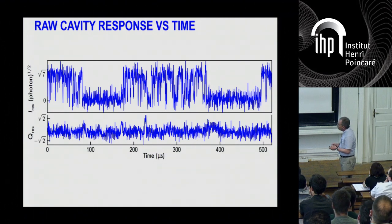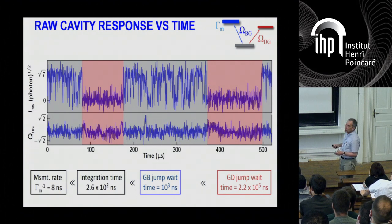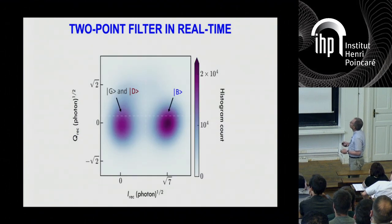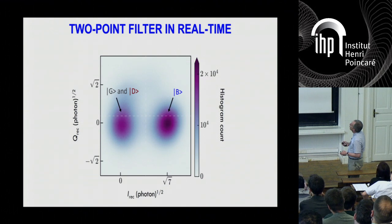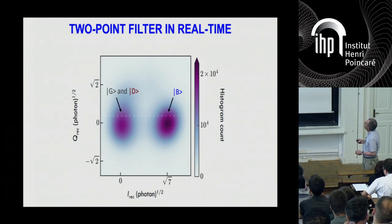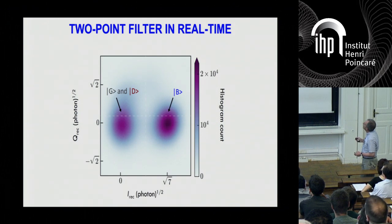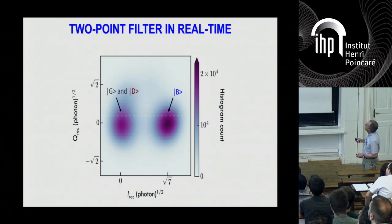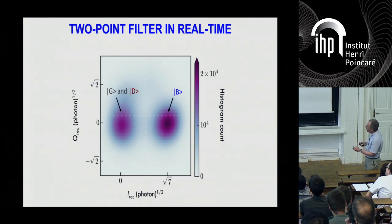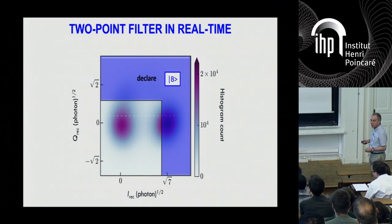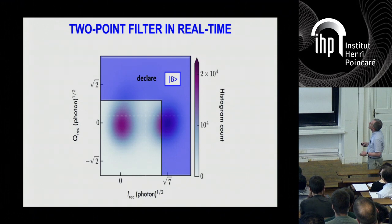So you can actually assign right away these periods, these different periods to the data. It's quite obvious from this example. And this is possible because we can apply a filter to this continuous data. And this is what happens in IQ space. So you have essentially two spots corresponding to the B state. That's the response of the B state. And the response of the G and D state are basically located in this area.